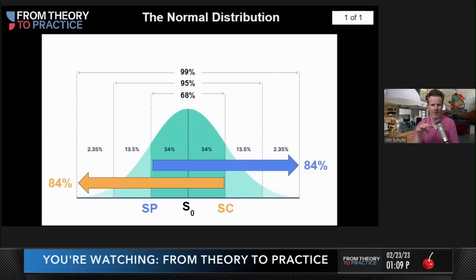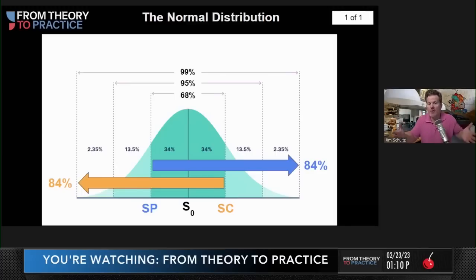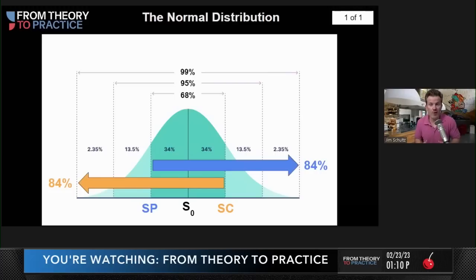If I put the current stock price as the center point of the distribution, I can go out one standard deviation on either side — that's your 68% range. Two standard deviations gives the 95% range. Three standard deviations gives the 99% range. I can then use my short option strategies and philosophy around these expected and anticipated movements in whatever stock I might be looking at.